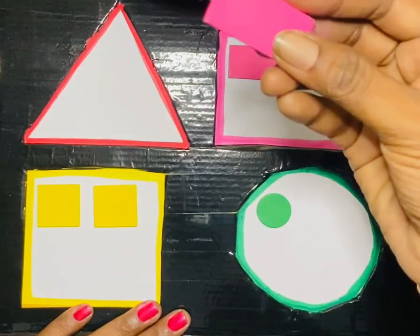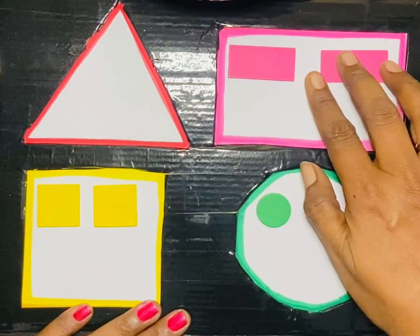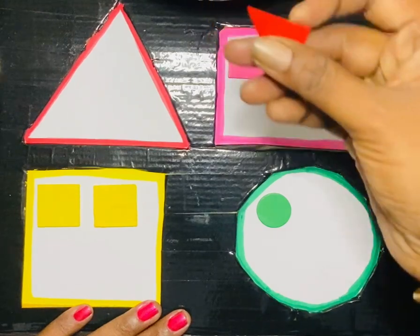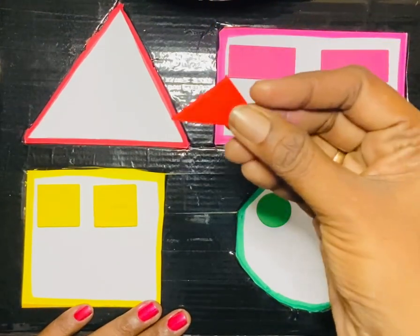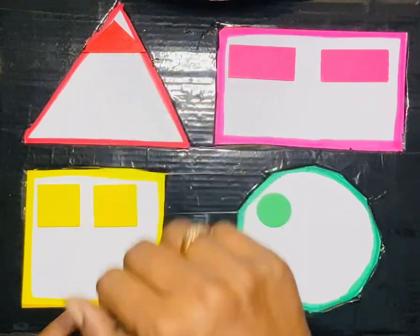Next one, Rectangle. So I am placing here. Next is Triangle. Triangle has 3 sides and 3 corners.